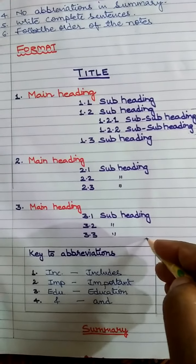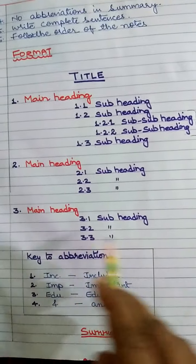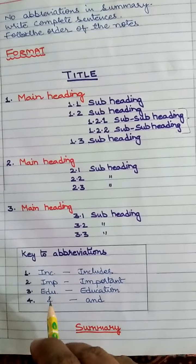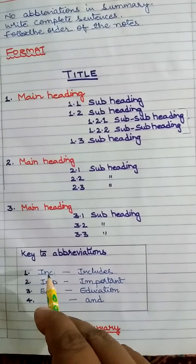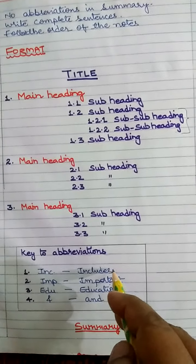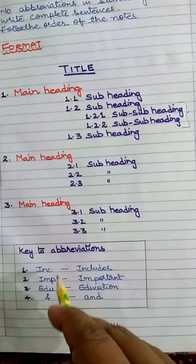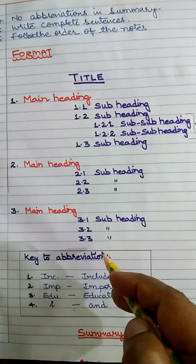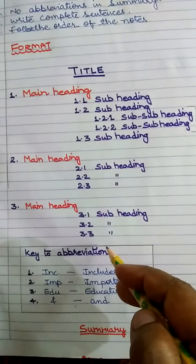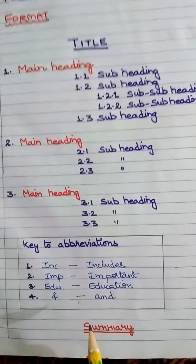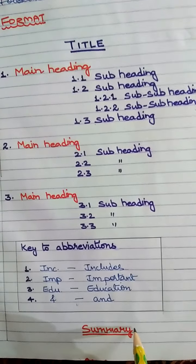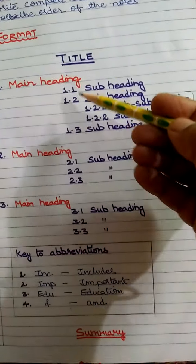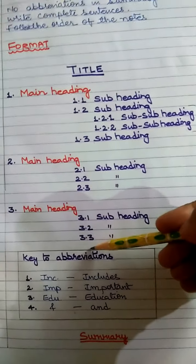Now after that make a box and there you write key to abbreviations. For example I have written, first you will write the short form and the complete word over here. This way you need to write four abbreviations after making notes. Now after completing this you write summary in the center of the page. Underline it and start writing summary of the notes what you have prepared in your note-making.